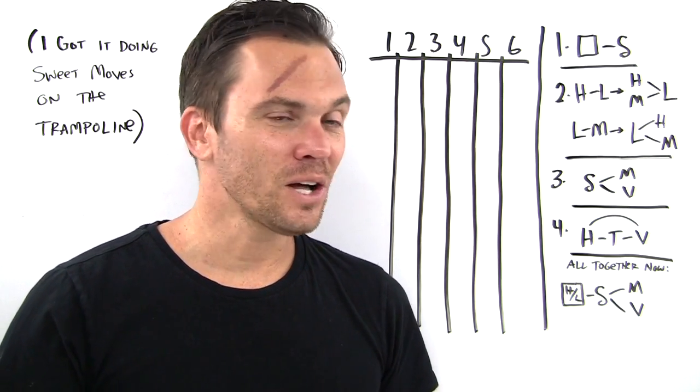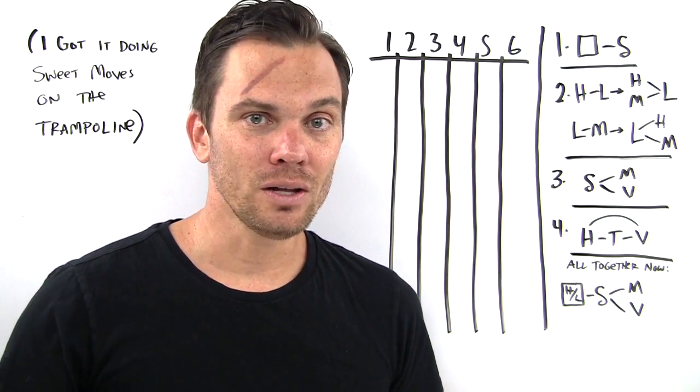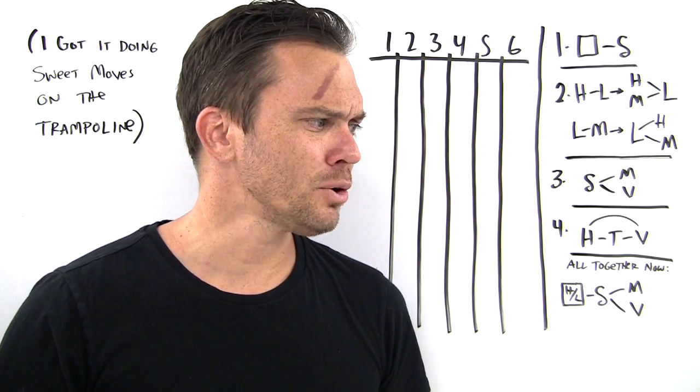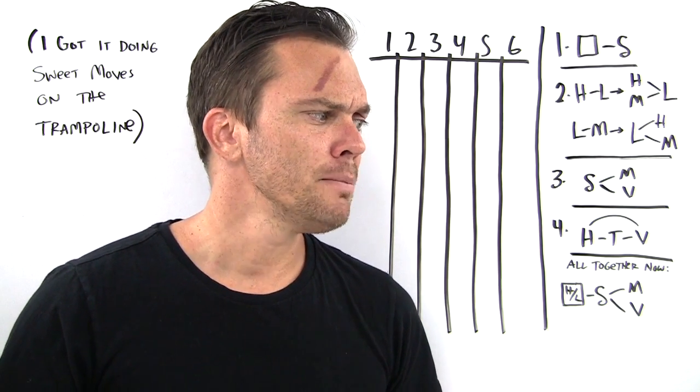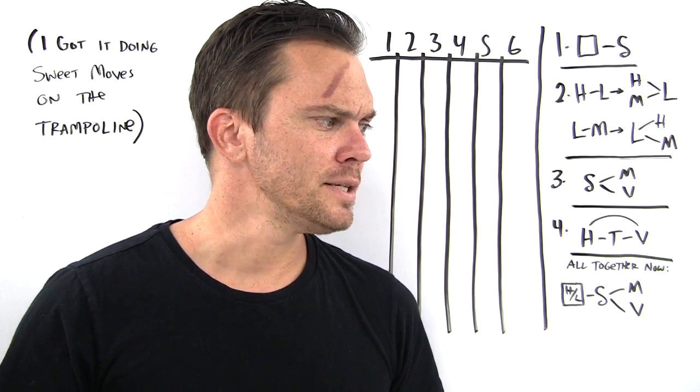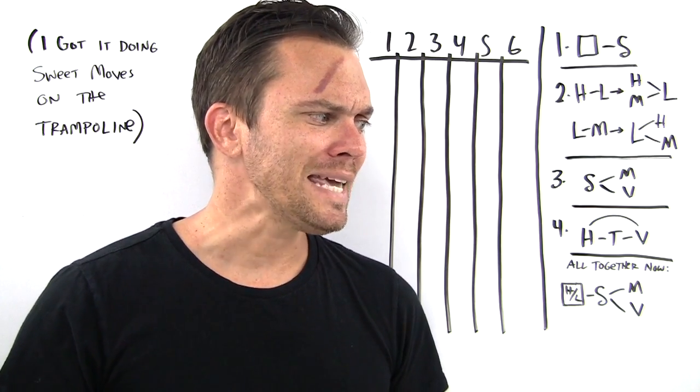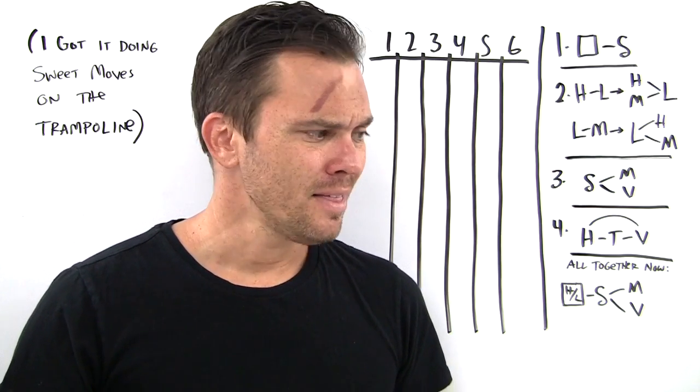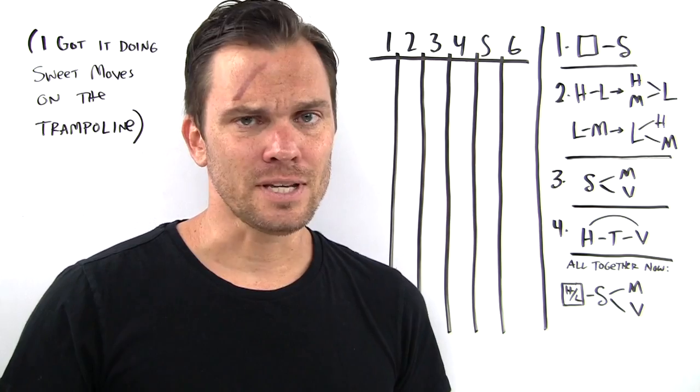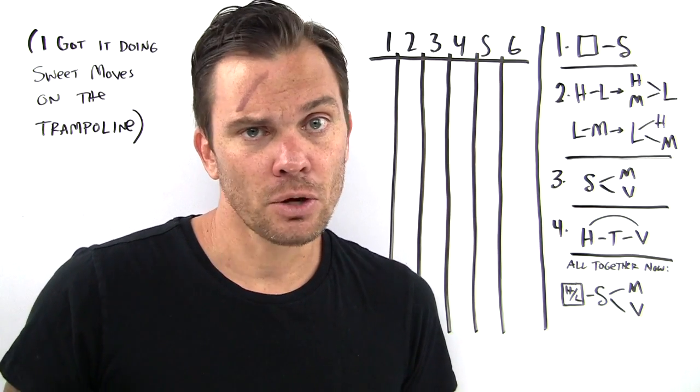All right, question 12. A global accounting of all of our elements. Notice that answer choice A breaks rule two, B breaks rule four, D breaks rule one, E breaks rule three. That leaves us with only answer choice C, which doesn't break any rules. So it's accurate.